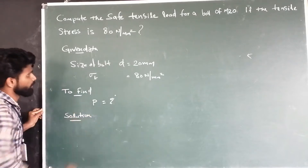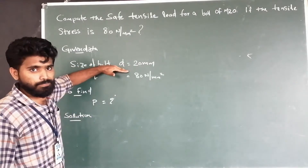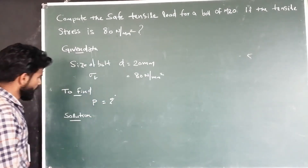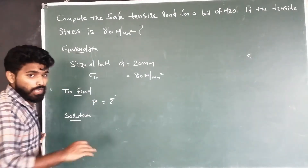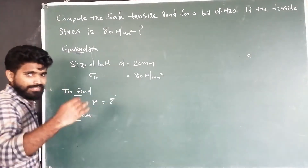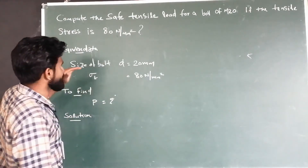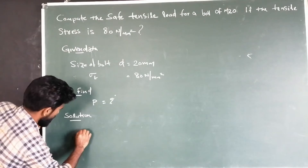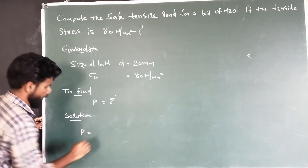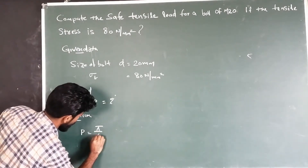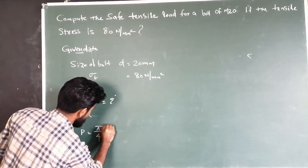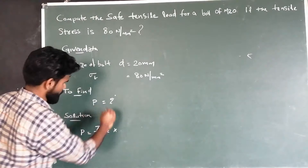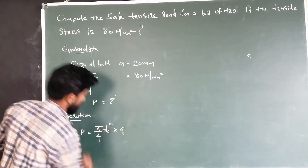What is the solution? The formula is: when we load, we need load by area — stress into area. So P is equal to pi by 4 times dc squared into sigma T. The stress value is 80 N/mm².